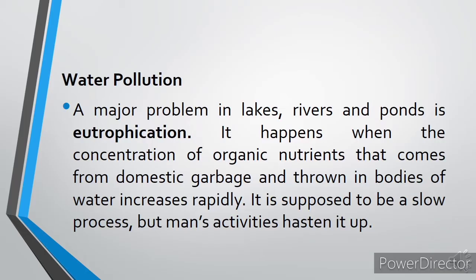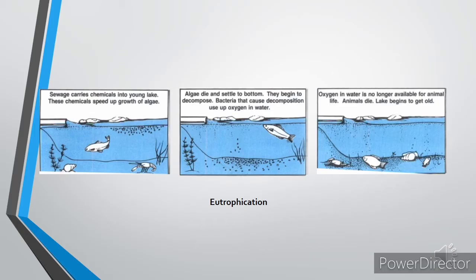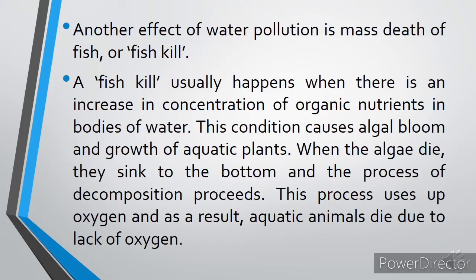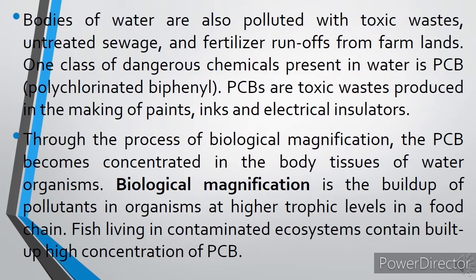Water Pollution: A major problem in lakes, rivers, and ponds is eutrophication. It happens when the concentration of organic nutrients from domestic garbage thrown into bodies of water increases rapidly. It is supposed to be a slow process, but human activities hasten it. Another effect of water pollution is mass death of fish, or fish kill. A fish kill usually happens when there is an increase in concentration of organic nutrients in bodies of water, causing algal bloom and growth of aquatic plants. When the algae die, they sink to the bottom, and decomposition uses up oxygen, causing aquatic animals to die. Bodies of water are also polluted with toxic waste, untreated sewage, and fertilizer run-off from farmlands.